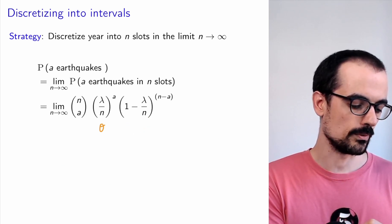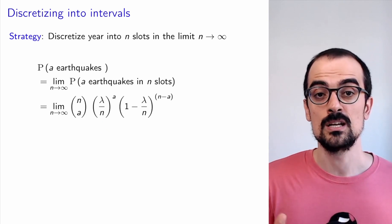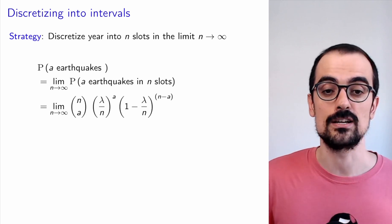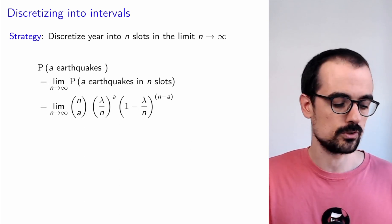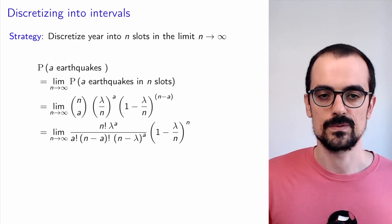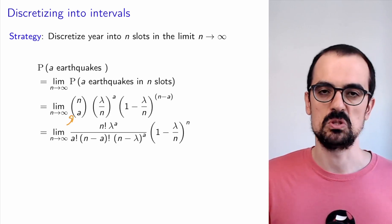So the parameter of the binomial is lambda over N. This is where theta usually goes and 1 minus theta goes, and we have A and N minus A. Now, instead of theta, we have lambda over N. So under our assumptions, we have this binomial, but remember that we're taking the limit where N goes to infinity. From here on, it's just math.